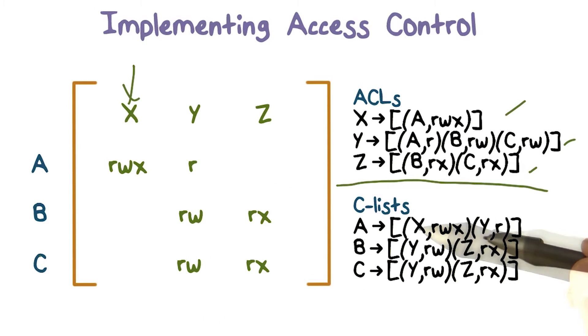User A has access for resource X, and the access rights are read, write, and execute. Similarly, user A can read resource Y. So this is the C-list for user A.